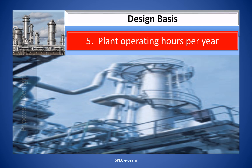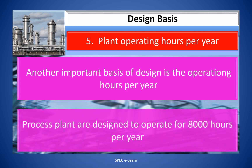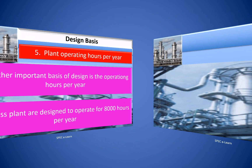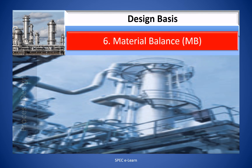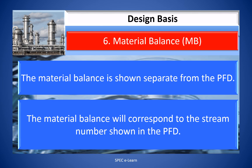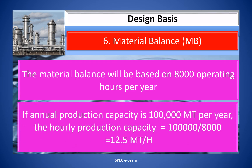Five: Plant Operating Hours per Year. Another important basis of design is the operating hours per year. Process plants are designed to operate for 8,000 hours per year. The material balance is shown separate from the PFD and will correspond to the stream numbers shown in the PFD. The material balance will be based on 8,000 operating hours per year. If the annual production capacity is 100,000 MT per year, the available production capacity is calculated as 100,000 divided by 8,000, which equals 12.5 MT per hour.